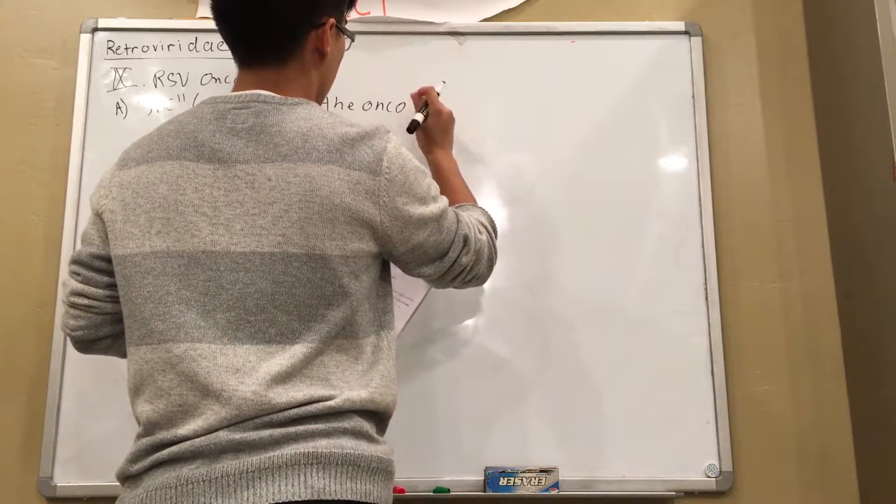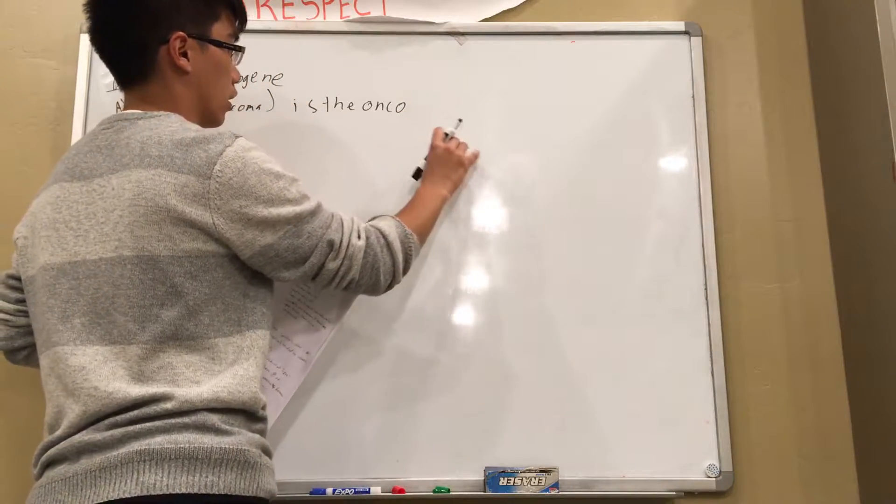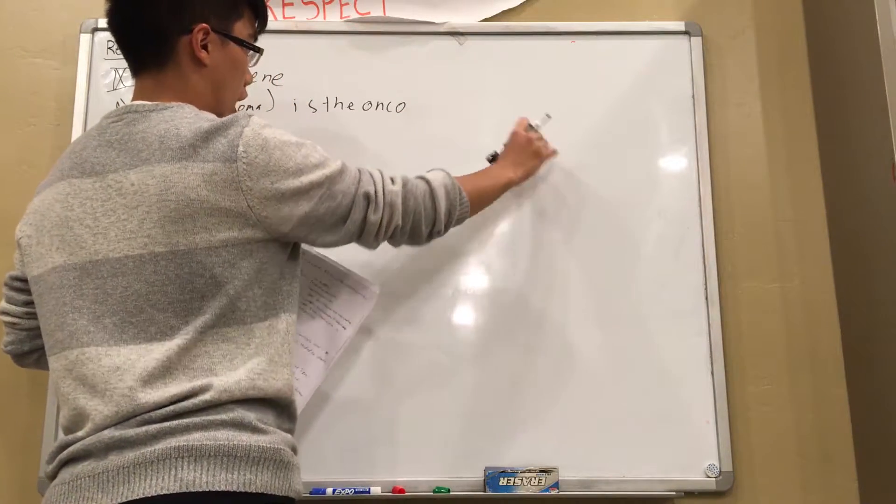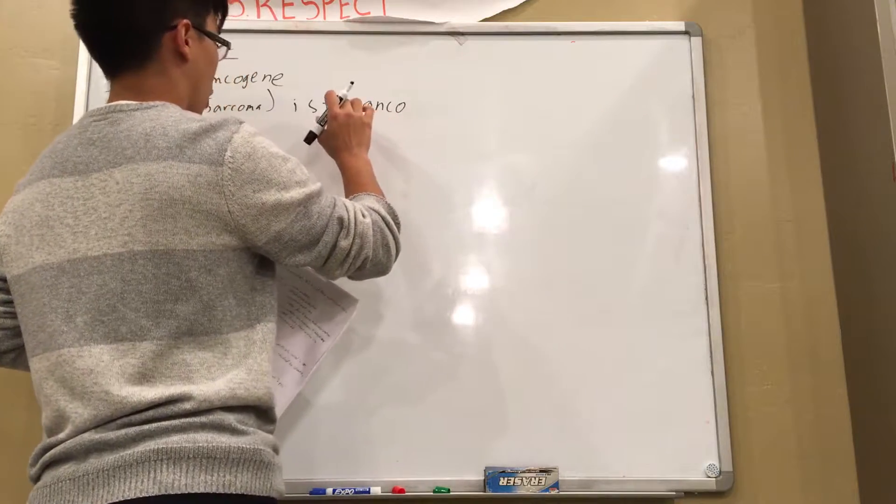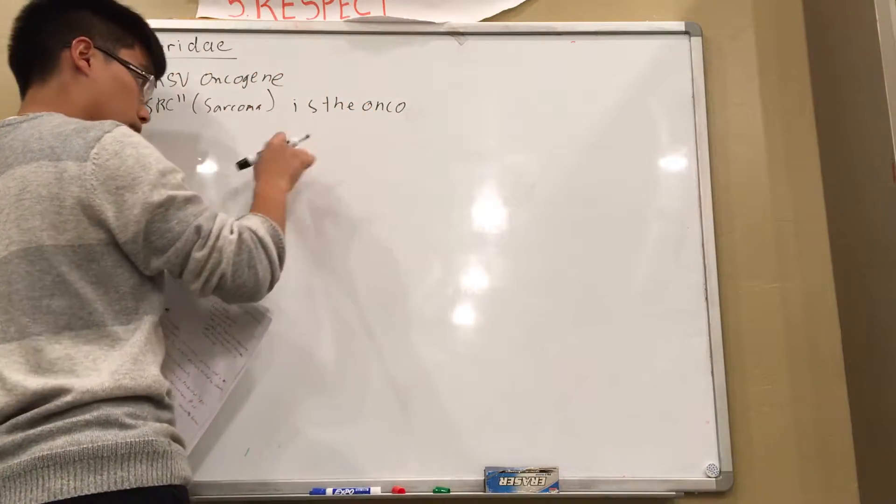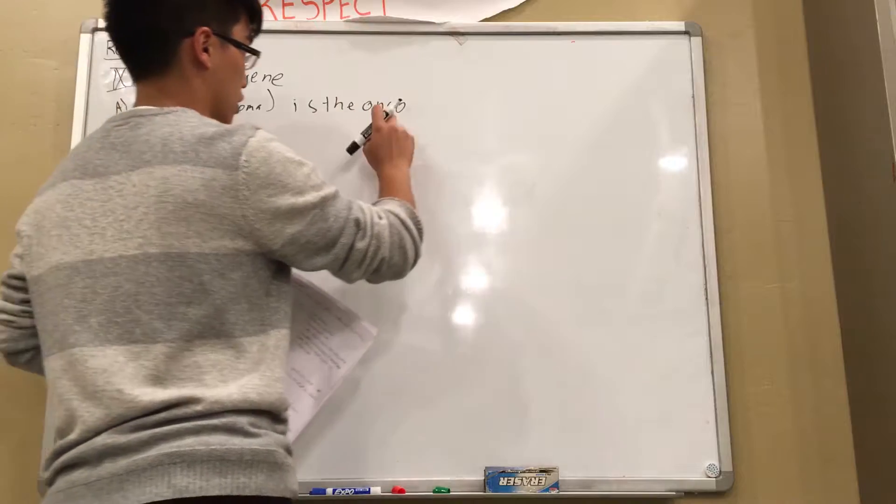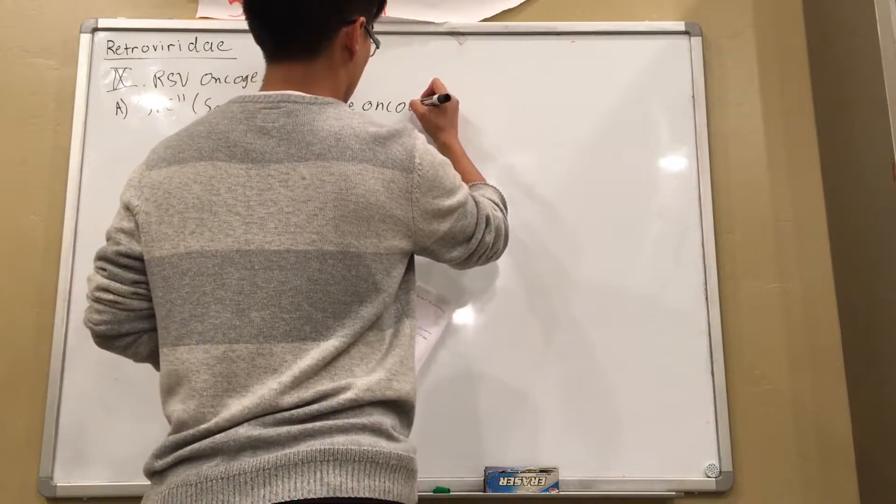So you know how retroviruses have the gag and the pol, envelope reading frames, and you can have an optional oncogene reading frame. For RSV specifically, it has an optional oncogene. It's called the sarcoma oncogene.